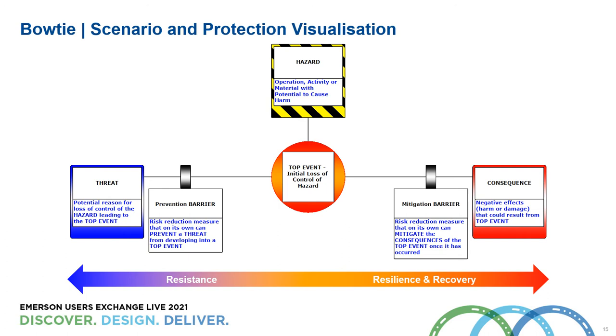The top event is caused by one or more threats, and we prevent the threats from becoming top events by having prevention barriers. Once we've lost control of the hazard, once we've had the top event, we have mitigation or recovery barriers to either reduce the likelihood or reduce the impact of the consequences.